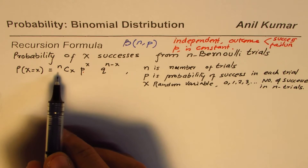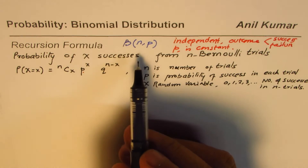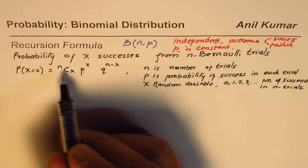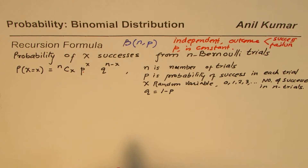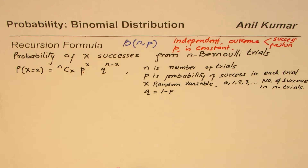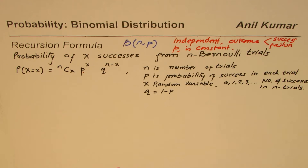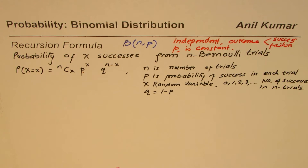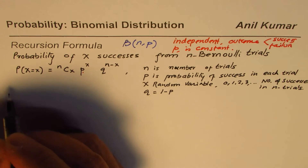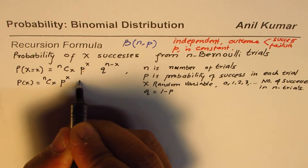We are familiar with this formula: the probability of x successes out of n trials is nCx times p to the power of x times q to the power of n minus x. This formula is dependent on p, n, and q, where q equals 1 minus p. Based on these two parameters we can develop the whole binomial distribution. Now we want to figure out: if we know the probability for x successes, what will be the probability of x plus 1 successes? We write P(x) = nCx p^x q^(n−x).